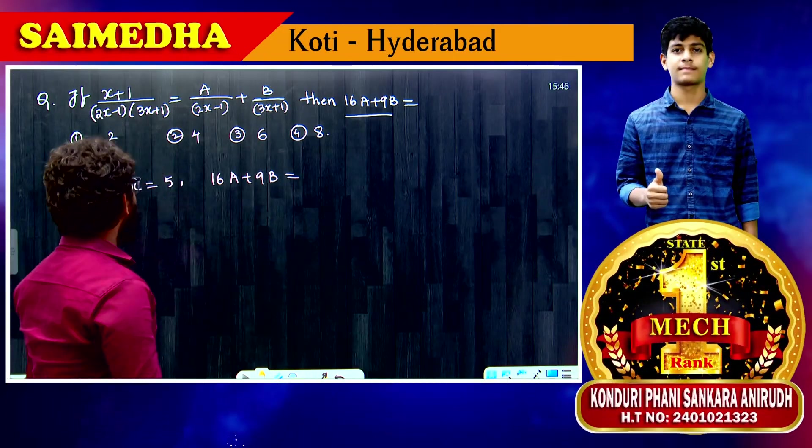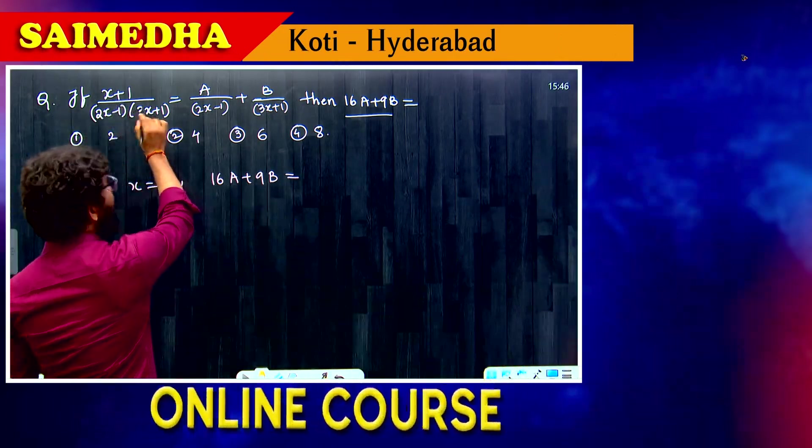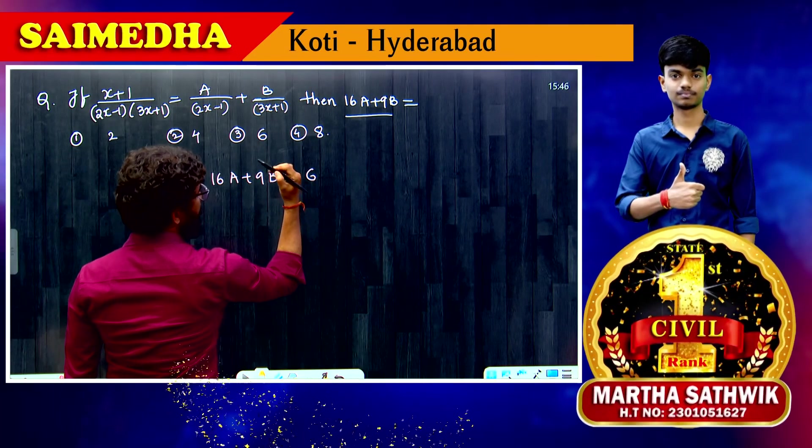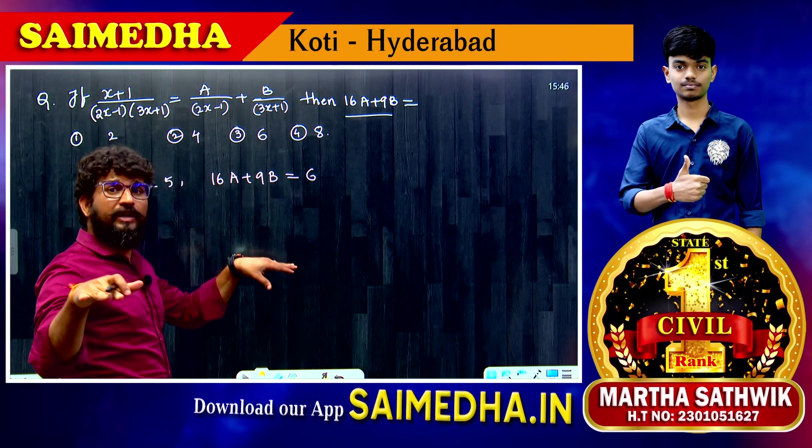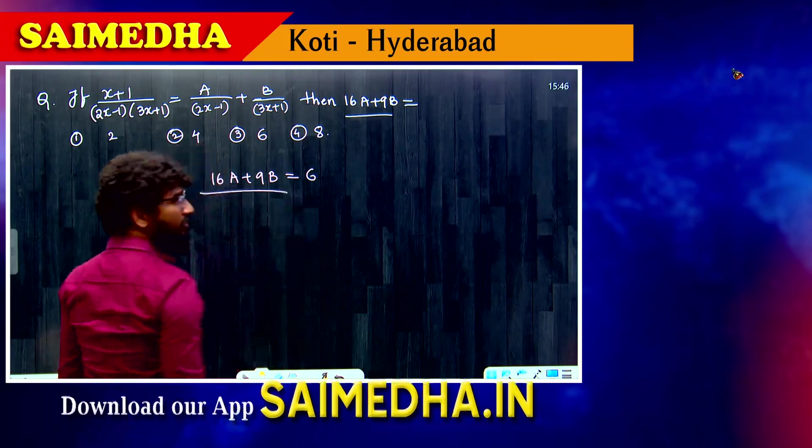16A becomes, plus 9 into B becomes 10 minus 1, 9B. Denominators cancel here. There is no question about it. And right hand side, X plus 1 and 5 plus 1 is 6. Denominators cancel here.